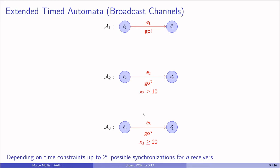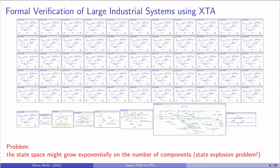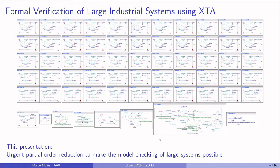Here we have an example of the implementation of a fire alarm system from a German company using Extended Time Automata in the model checker UPPAAL. It has a number of components and it is very easy to model the system. However, there is a problem that the state space will grow exponentially because of the number of components. This is known as the state explosion problem.